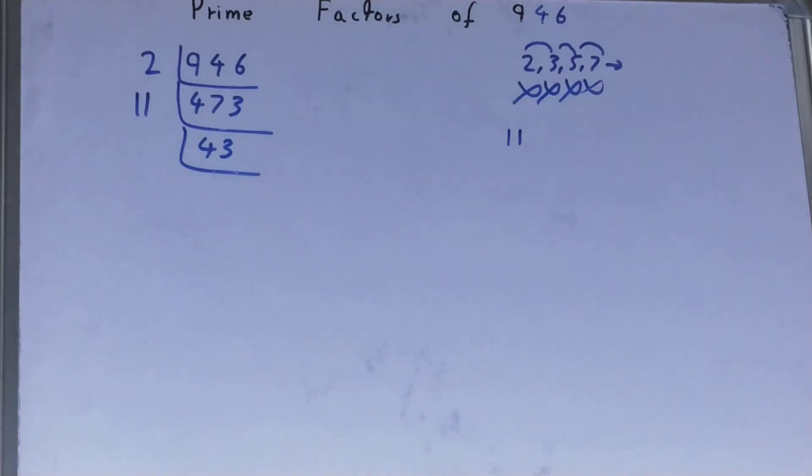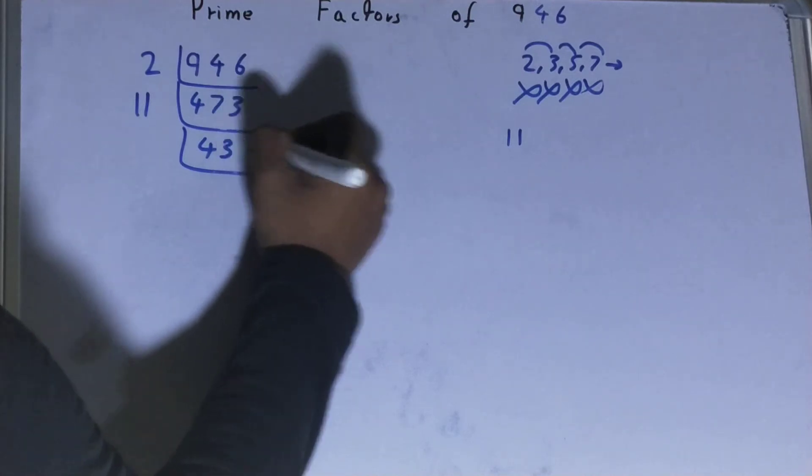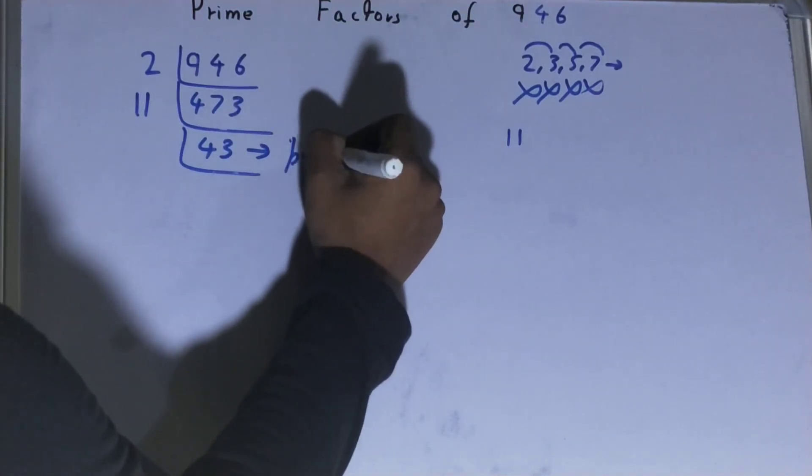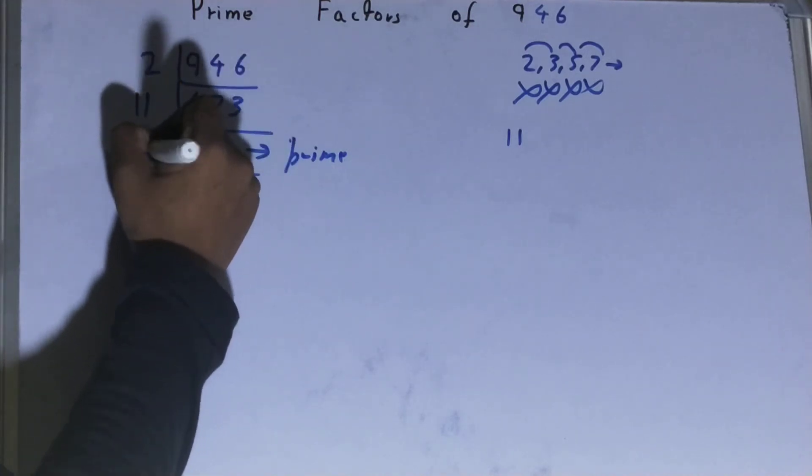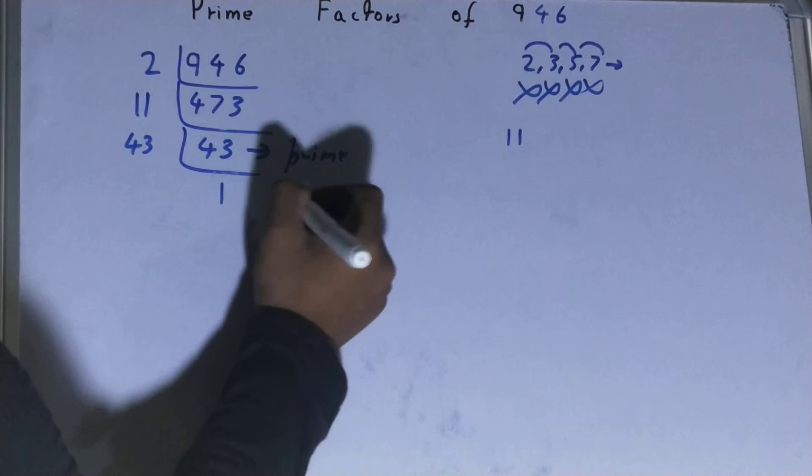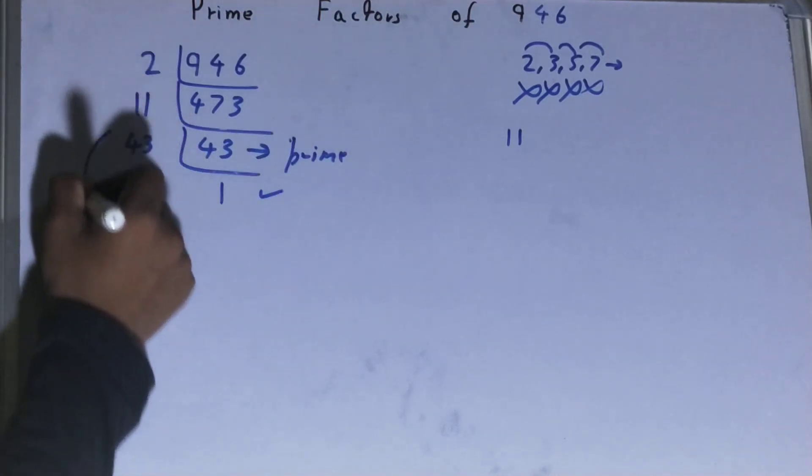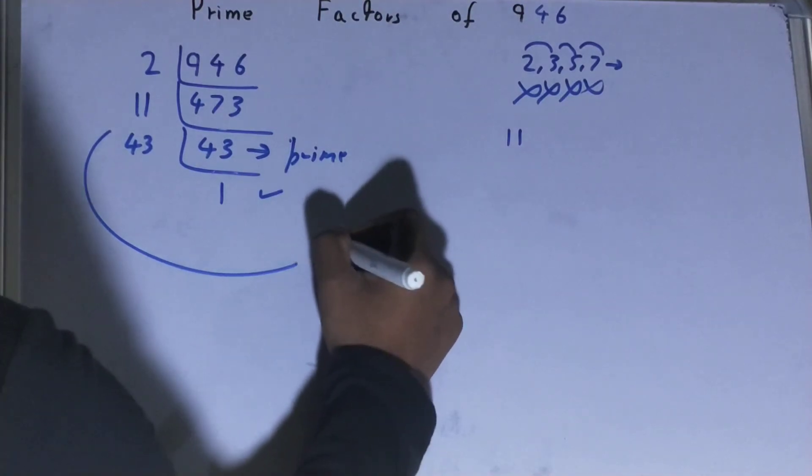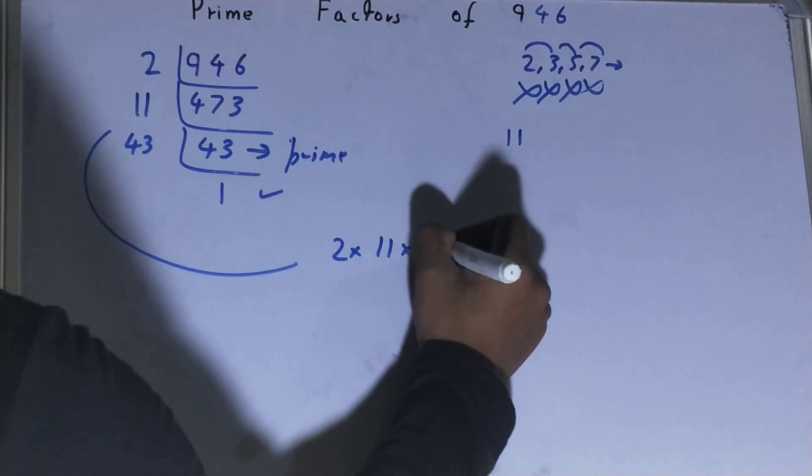So you will be left with 43. Now this 43 is not divisible by 11, and 43 is itself prime. So to divide this 43, you need 43 on the left-hand side, and when you do so you will be left with 1. Once you are left with 1, the work is done, and whatever you have on the left-hand side will be the set of prime factors for the number 946, that is 2 times 11 times 43.